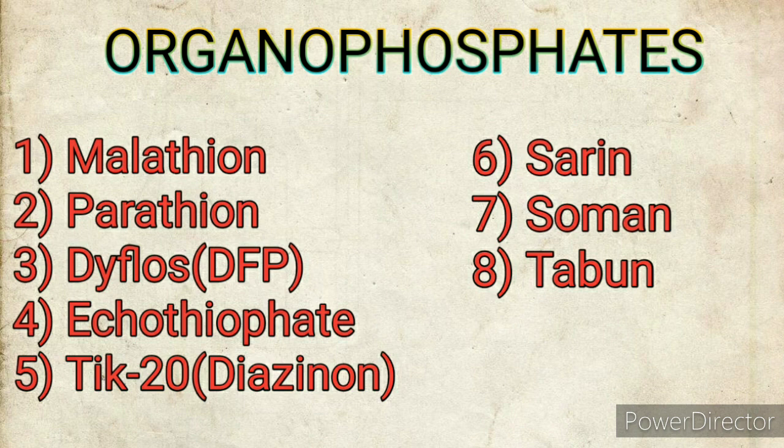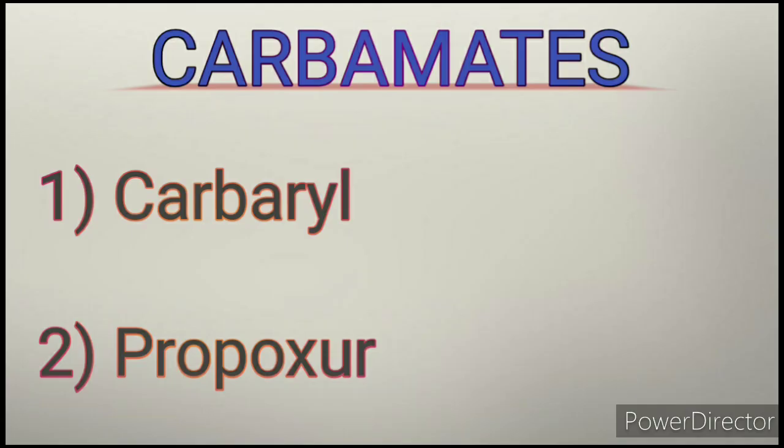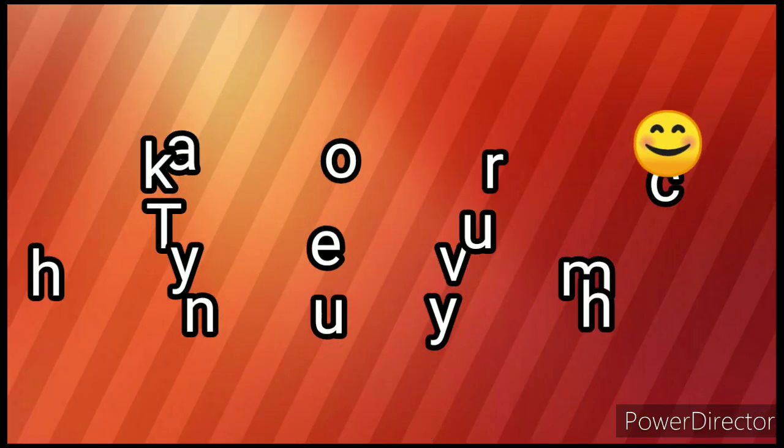Now the second group — carbamates. In carbamates, two drugs are mainly mentioned: carbaryl and propoxur, and these are mainly used as insecticides. Thank you very much.